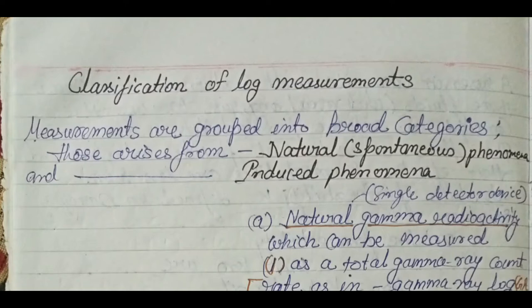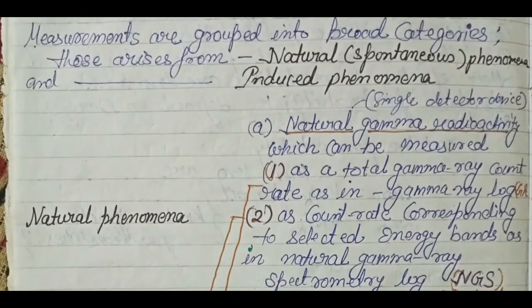The measurements are basically classified into two things: either there will be a natural source or an artificial source. In natural sources, what are the logs? The first is the natural gamma ray log.